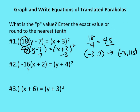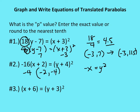For the second problem, dividing negative 16 by 4 gives a p-value of negative 4. The vertex is (negative 2, negative 4). The parent function is negative x equals y squared, so the parabola opens to the left. Moving 4 units to the left into the parabola along the x-axis, the focus is at (negative 6, negative 4).